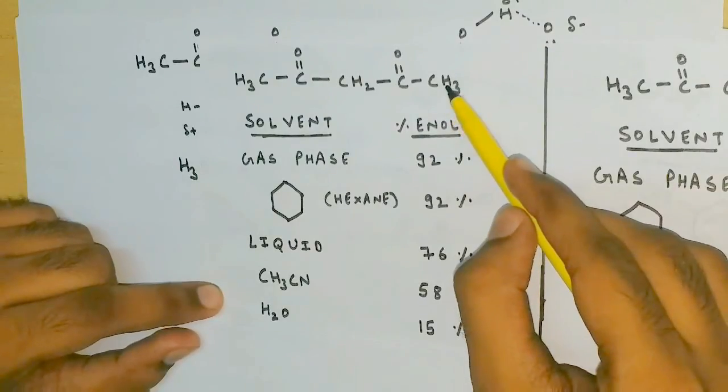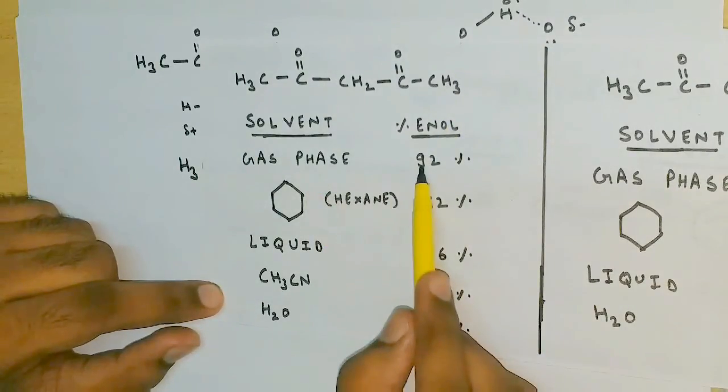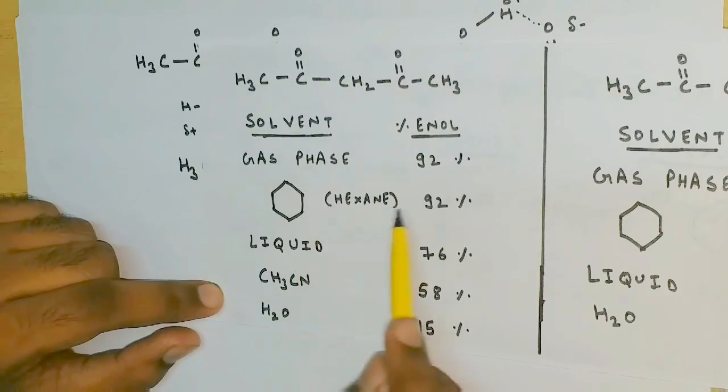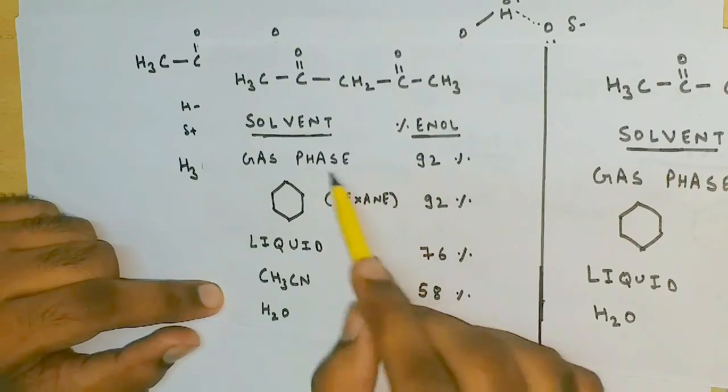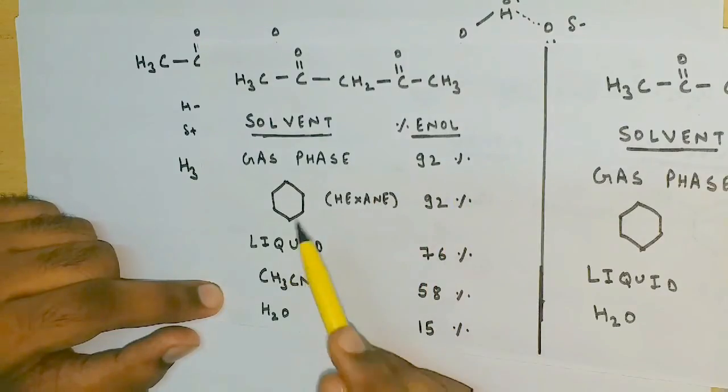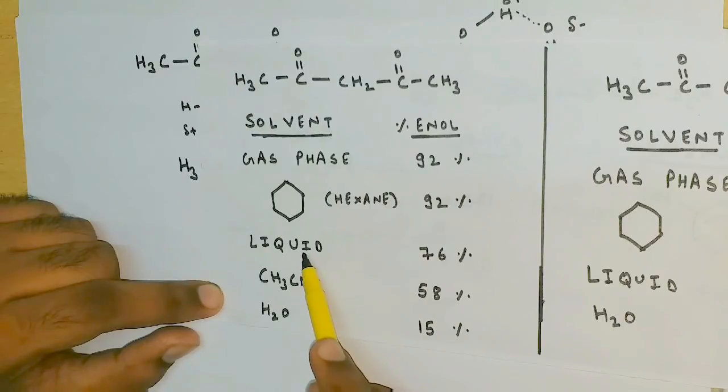To strengthen my point, I would like to show you some data on this. Consider this compound again and see that in the gas phase it has the highest enol content, because there is no other solvent. So the intramolecular hydrogen bonding can take place as usual.